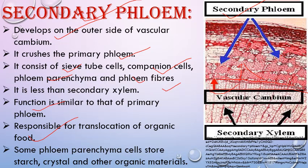Some phloem parenchyma cells act as storage cells — they store starch and some metabolites, crystals, and other organic material. Phloem parenchyma helps in storage.